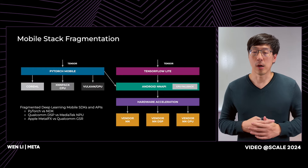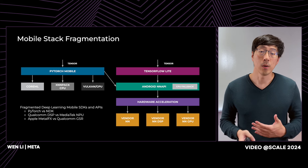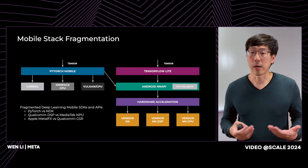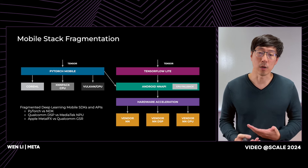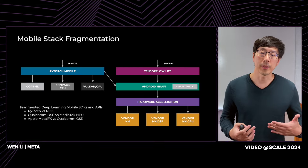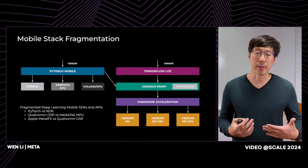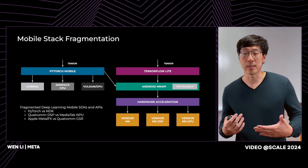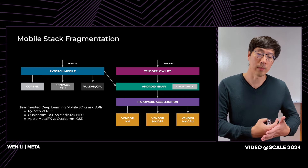Implementing deep learning models on a variety of mobile devices at Meta's scale is also very challenging, given the fragmentation of the mobile stack for deep learning model inference. At the framework level, Apple has its Core ML SDK, Android has the NDK API, and Meta commonly uses PyTorch. At the hardware level, there are many different hardware acceleration options from different chip vendors, for example DSP from Qualcomm. This fragmentation causes significant engineering complexity and results in inconsistent and unmanageable model performance across devices.